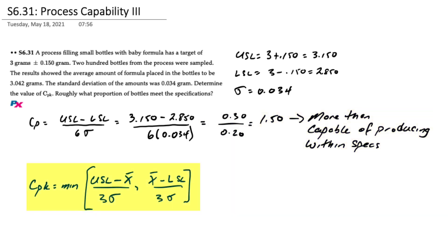Now on to the CPK. That's equal to the minimum of the upper spec minus the average over three sigma or the average minus the lower specification divided by three sigma.